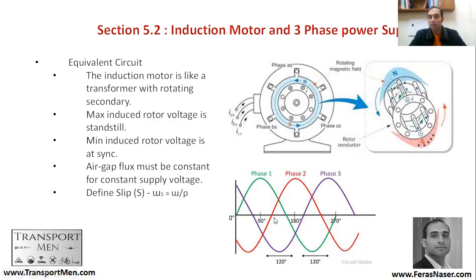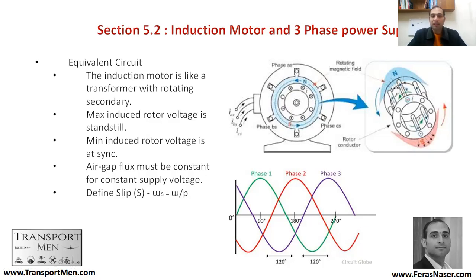This is the first line, the second line, and the third line — first phase, second phase, and third phase. A few notes: the induction motor is like a transformer with a rotating secondary. Maximum induced rotor voltage occurs at standstill. You really need to look at this in more details — what voltages are being created and how to calculate them, including the maximum and minimum voltage introduced in the rotor.